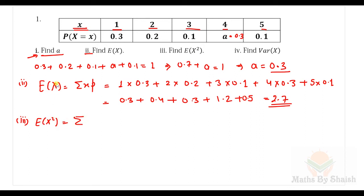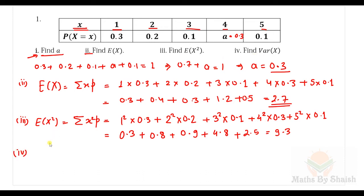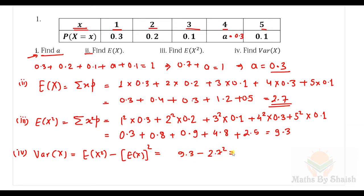The third part is E(X²). If E(X) uses the formula Σ x·p, then E(X²) uses Σ x²·p. So we calculate: (1² × 0.3) + (2² × 0.2) + (3² × 0.1) + (4² × 0.3) + (5² × 0.1), giving E(X²) = 9.3. Hence, the variance is E(X²) − [E(X)]² = 9.3 − (2.7)² = 9.3 − 7.29 = 2.01.